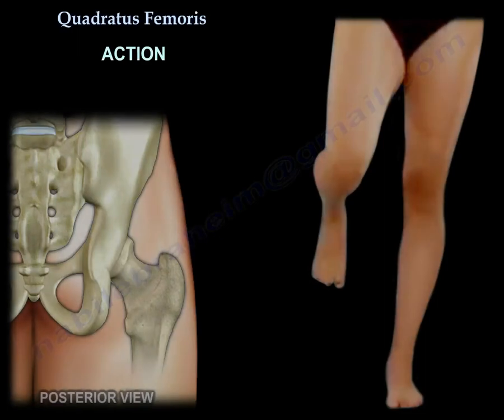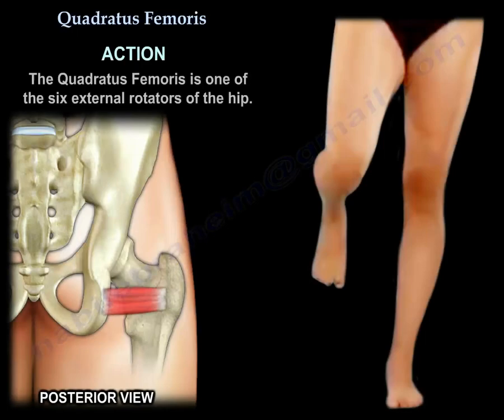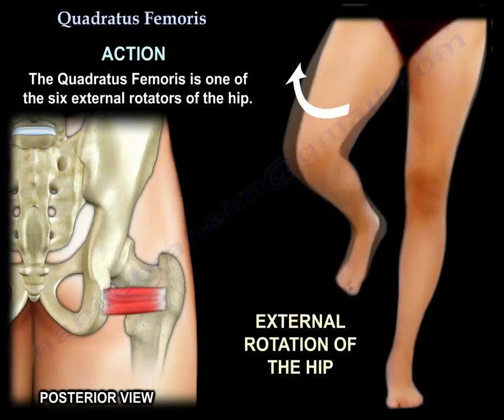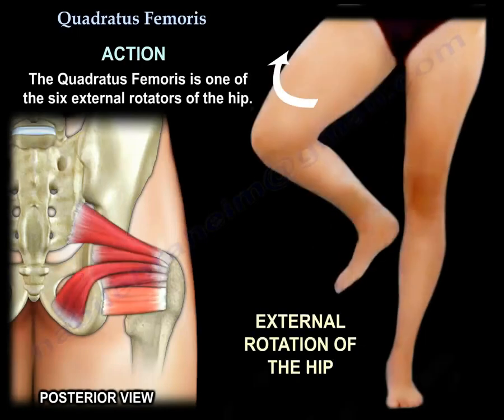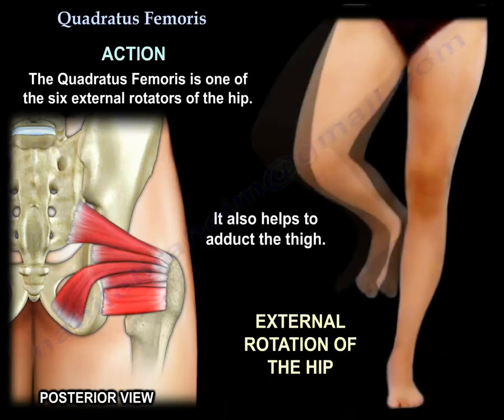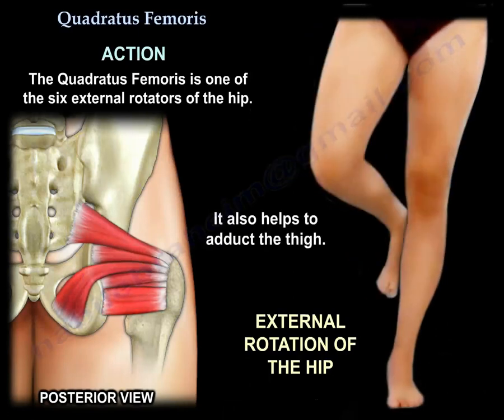The quadratus femoris is one of the six external rotators of the hip. It also helps to abduct the thigh.